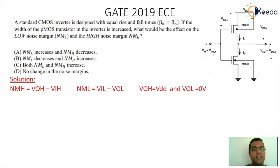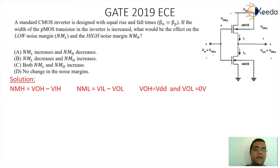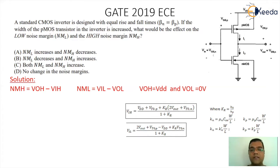The noise margin is defined in terms of two parameters: noise margin high and noise margin low. Noise margin high is defined as VOH minus VIH, and noise margin low is defined as VIL minus VOL. The VOH value corresponds to VDD and VOL corresponds to zero. We need to understand the values of VIH and VIL. The standard formula: VIH equals (VDD + VTOP + KR × (2×VOUT + VTON)) divided by (1 + KR).